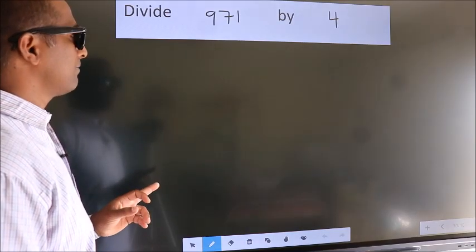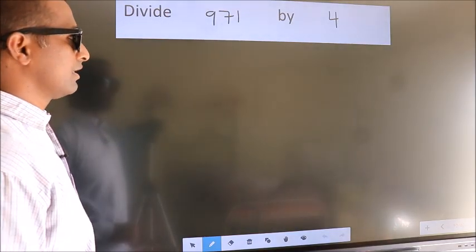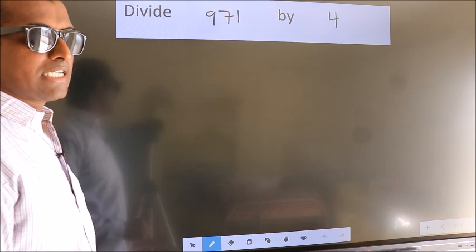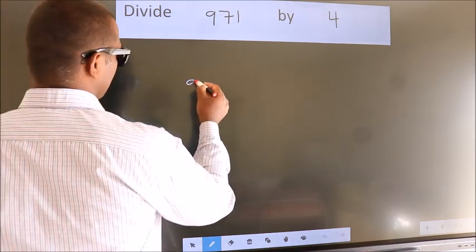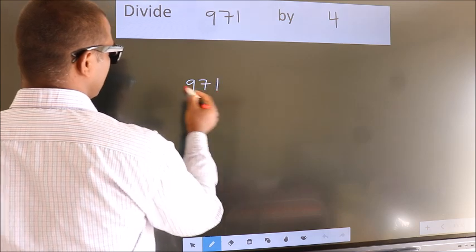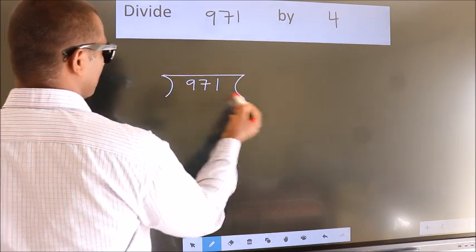Divide 971 by 4. To do this division, we should frame it in this way. 971 here, 4 here.